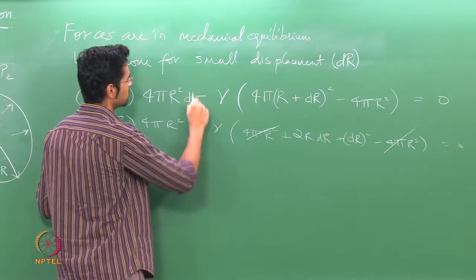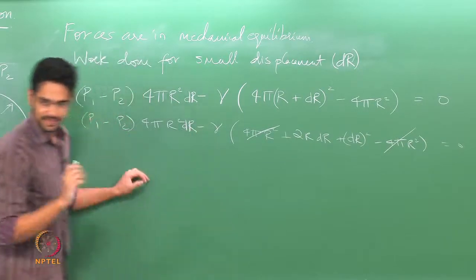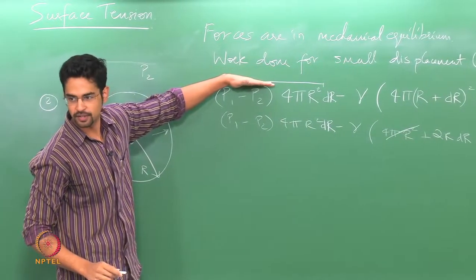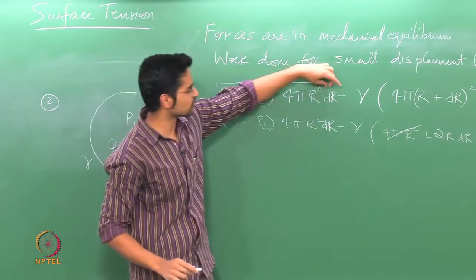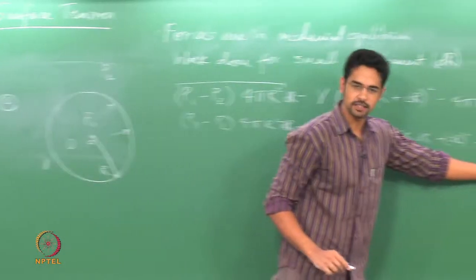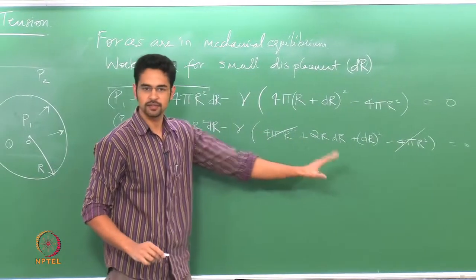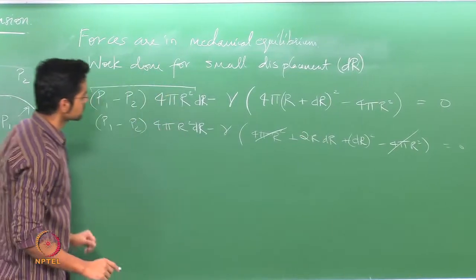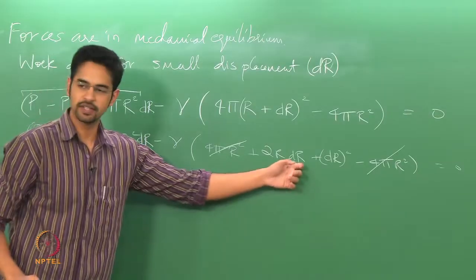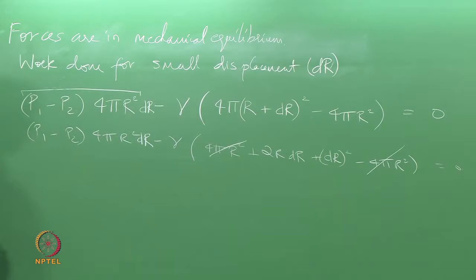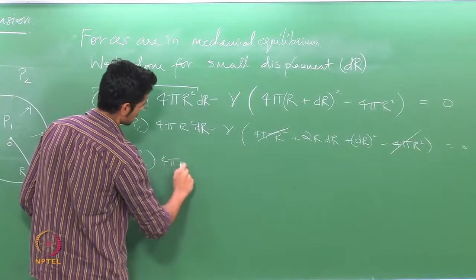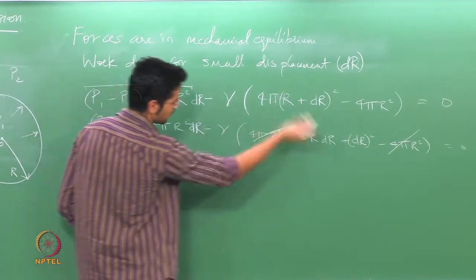Just to clarify: the force on the surface is P1 minus P2 times area, and the work is that force times the small displacement dr. For the surface tension term, we directly got the energy by interpreting gamma as the surface energy per unit area. Now with that clarified, I have P1 minus P2 on one side.